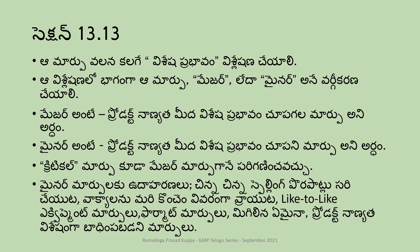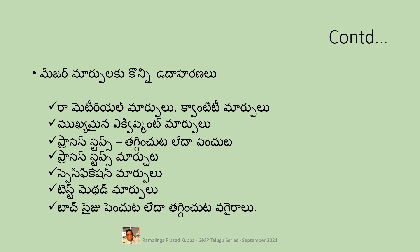There is another classification called critical, which can also be considered as major for change control. Some examples of major changes include: changes in raw materials, changes in quantity used in the process, any equipment changes, addition or deletion of process steps, changes in specifications, test methods, changes in batch sizes, etc.